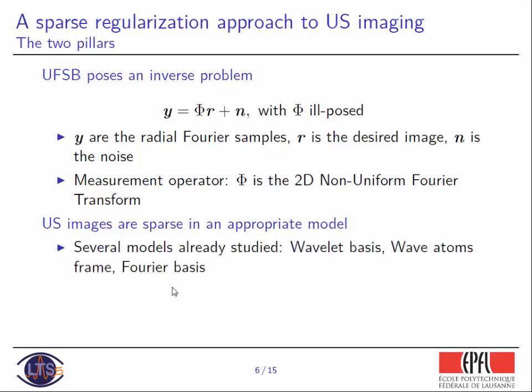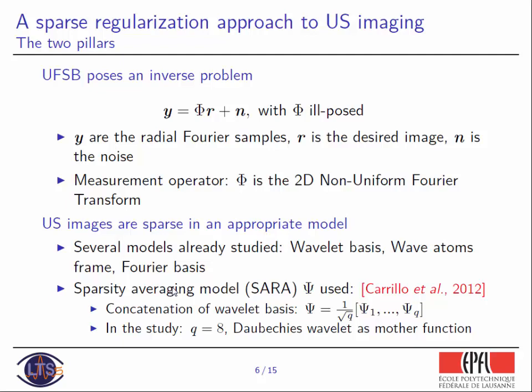Prior means behavior of this image, and the usual prior we use is the sparse model — that means the energy of the desired image is concentrated into few coefficients in a given model. Several models have already been studied, for example a wavelet basis, wave atom frame, Fourier basis. The model we use is slightly different: it's called a sparsity averaging model, which consists of a concatenation of wavelets. In our study, Q equals eight, and the wavelet functions we use are the Daubechies wavelets. Ψ₁ is the first Daubechies wavelet, which captures piecewise smooth functions, while Ψ₈ captures signals with high variation.